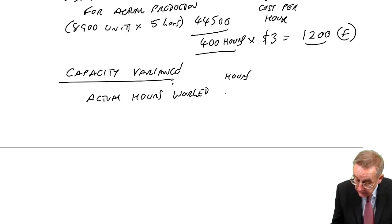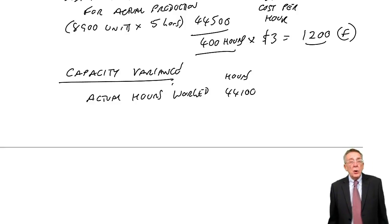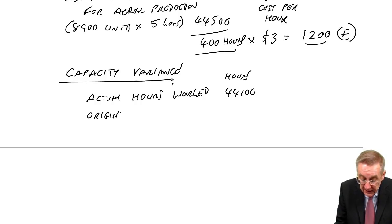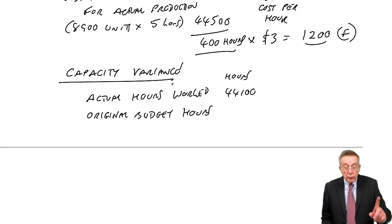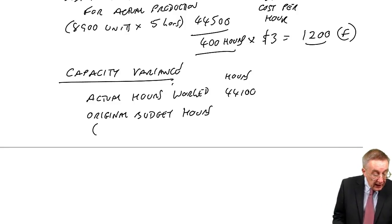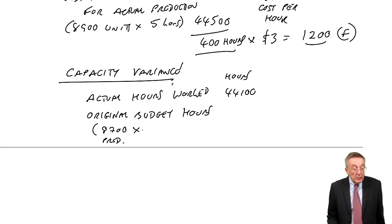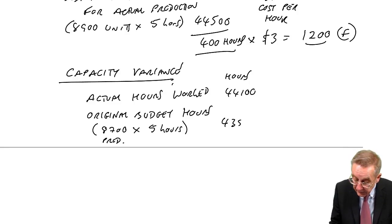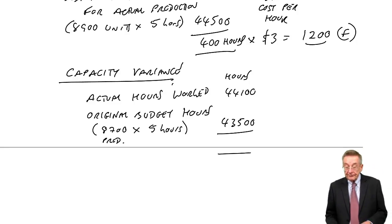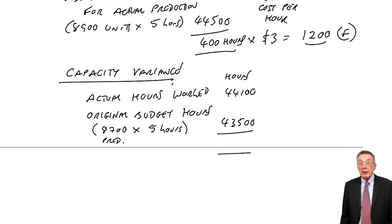I want to know if we got more hours or less hours than what we budgeted on. We compare it with the original budget hours. And how many hours have we budgeted on having? Remember, the original budget was on producing 8,700 units. The original budget assumed it would be five hours a unit. And therefore, we budgeted on having 43,500 hours available.